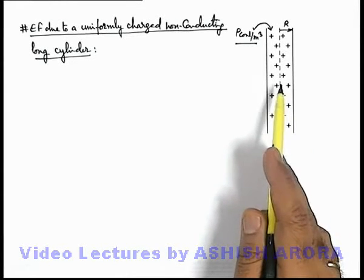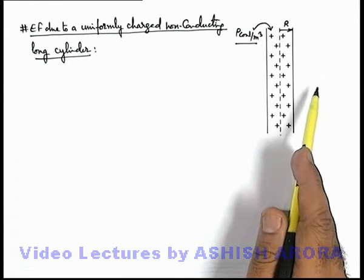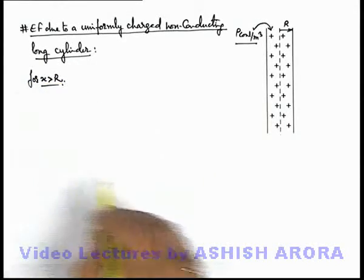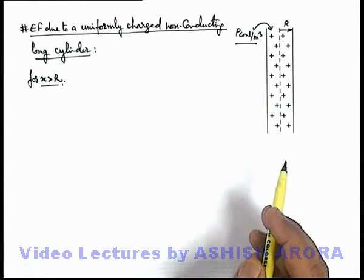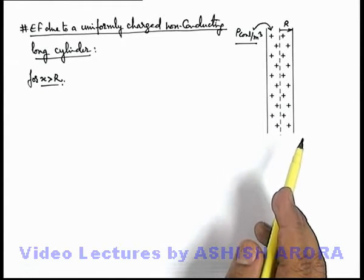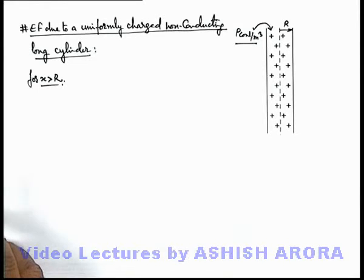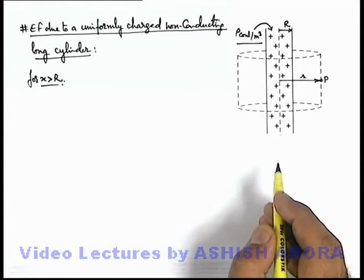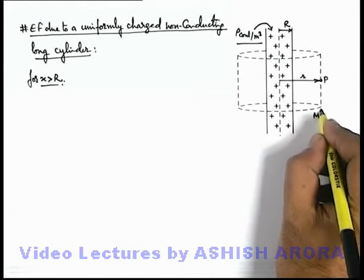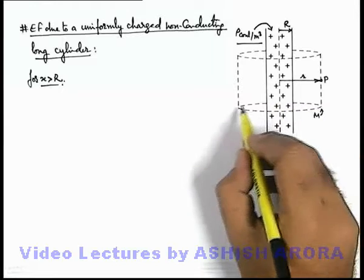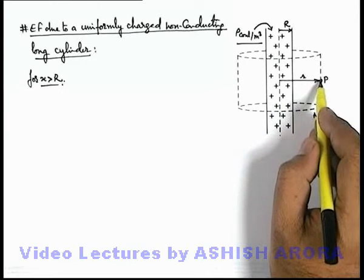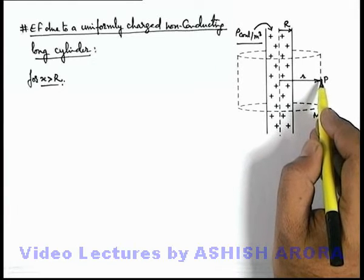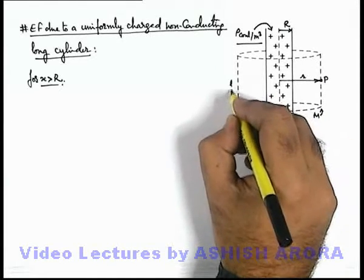For the outside region, that is at a point where x is greater than r, at point P we are required to find the electric field using Gauss's law. We consider a cylindrical Gaussian surface, which we can see in the diagram — this is the Gaussian surface M which we have considered. It is a cylindrical surface passing through point P where we are required to find the electric field.